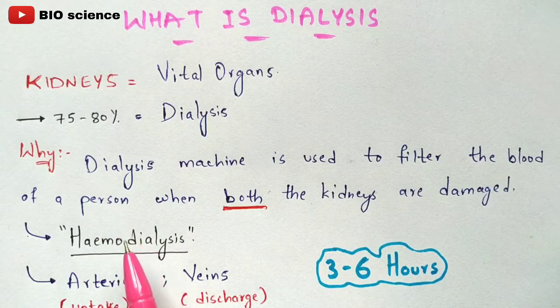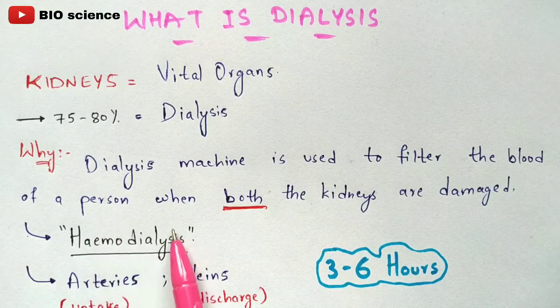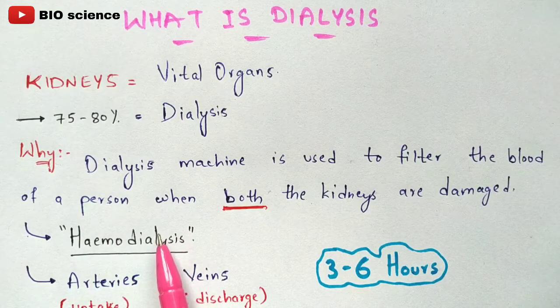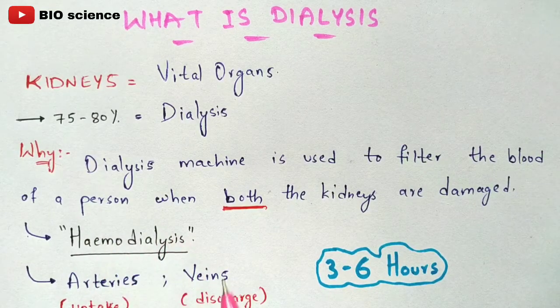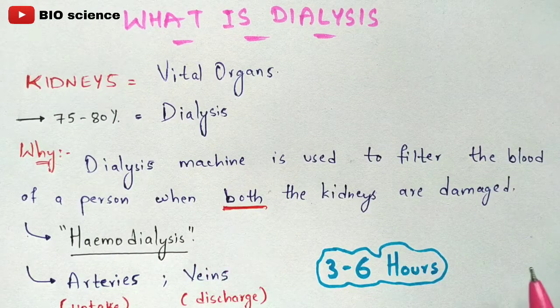This process is called hemodialysis. Let us break down the word: 'hemo' means blood, 'dialysis' means purification — so together, the purification of the blood is called hemodialysis.